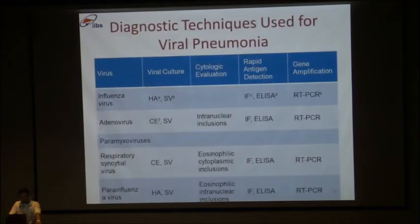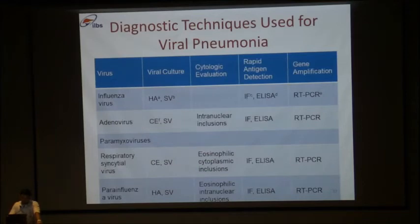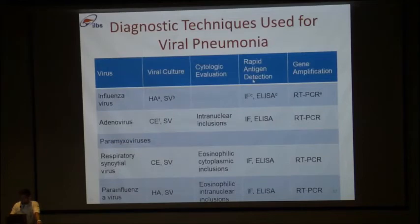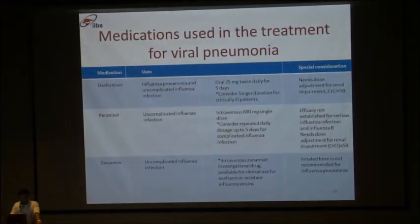Regarding diagnostic tests for viral pneumonia: in our institute, RT-PCR is utilized on throat swab or other respiratory viral specimens like BAL, mini-BAL, or sputum. Viral culture, cytological evaluation, and rapid antigen tests are also available; in COVID we were also using rapid antigen tests. For influenza A and B infections, oseltamivir, peramivir, and zanamivir are used. Oseltamivir is given at 75 mg twice a day for 5 days, with dose adjustment when creatinine clearance is less than 50.